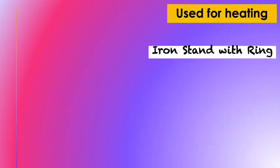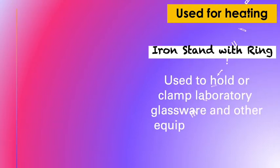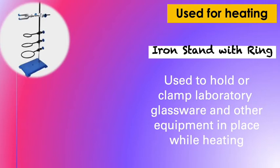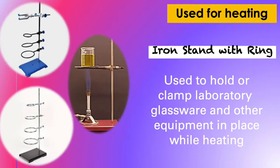The next one is iron stand with ring. It is used to hold or clamp laboratory glassware and other equipment in place while heating. Here's a picture of an iron stand with ring and also a clamp. This is how you will assemble the Bunsen burner, the iron stand, the gauze, and the beaker.